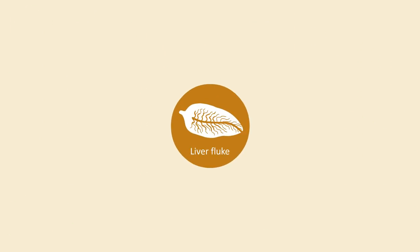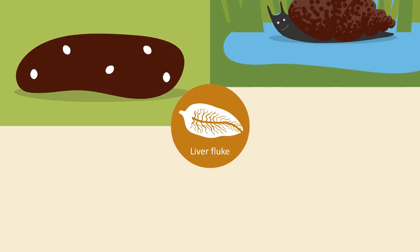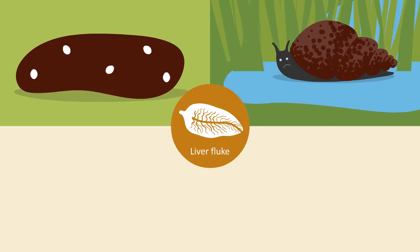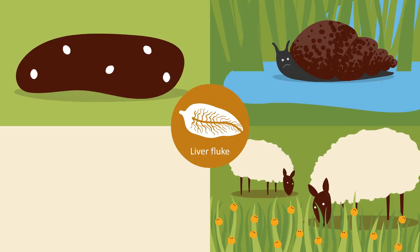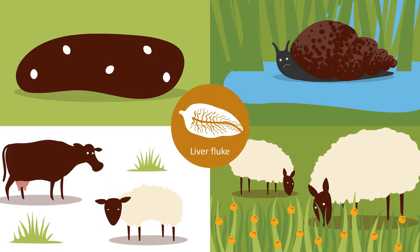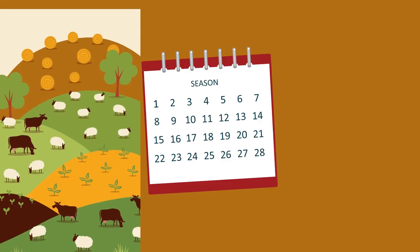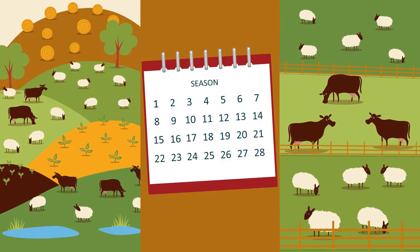There is a basic seasonality to the liver fluke life cycle, with adult fluke shedding eggs in spring, snails becoming infected in the summer, animals ingesting fluke cysts in the autumn, and showing disease and production effects in winter. Having said that, we do sometimes see liver fluke disease out of season, and fluke risk can vary from year to year, from farm to farm, and even from field to field.